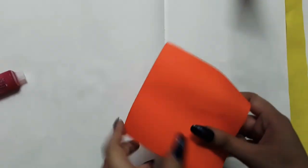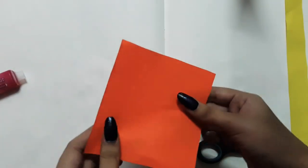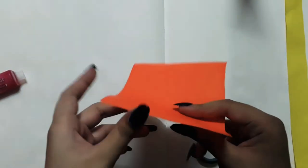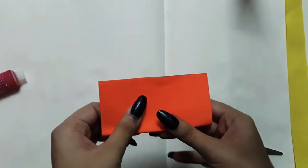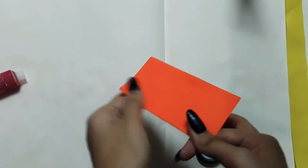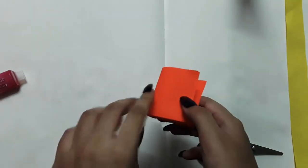Alright, so first things first, you're gonna take your square sheet of paper and fold it into eight parts. Be sure to see the video till the end - do not skip, because I'm gonna tell a big announcement at the end of the video.